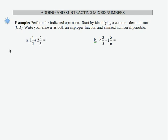We want to start by identifying a common denominator. I'm going to write that over here. My common denominator in this case is going to be 5 times 3, which is 15. That is also the lowest common denominator.